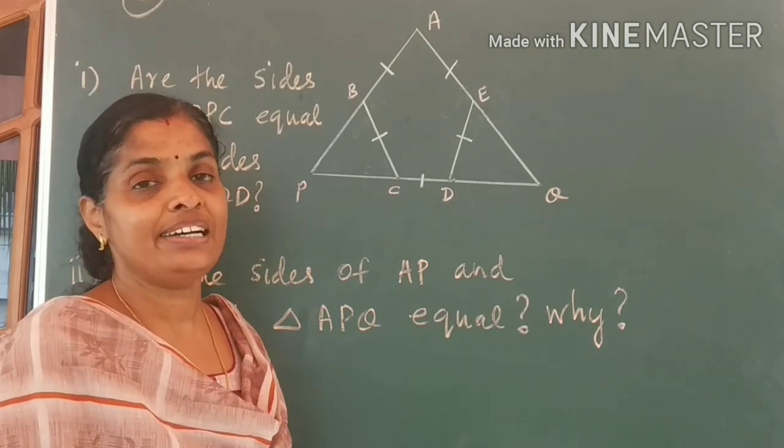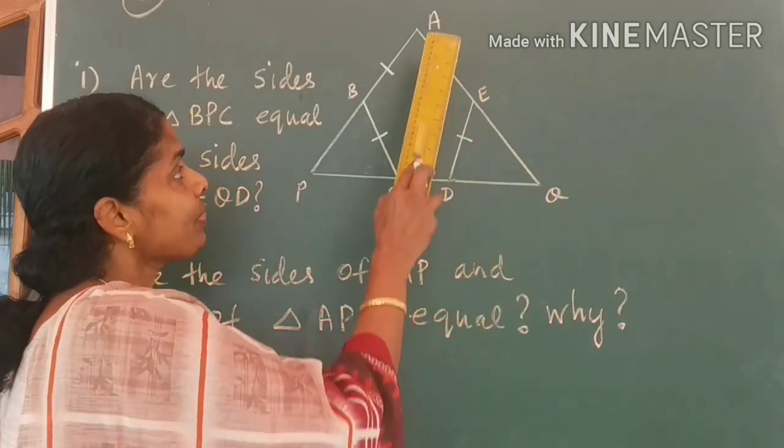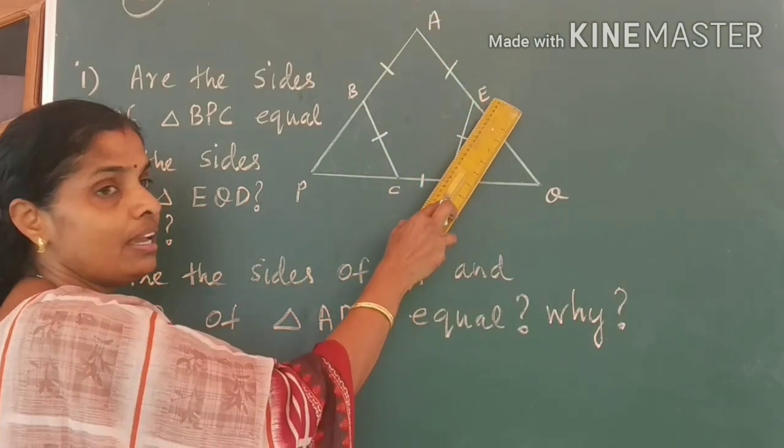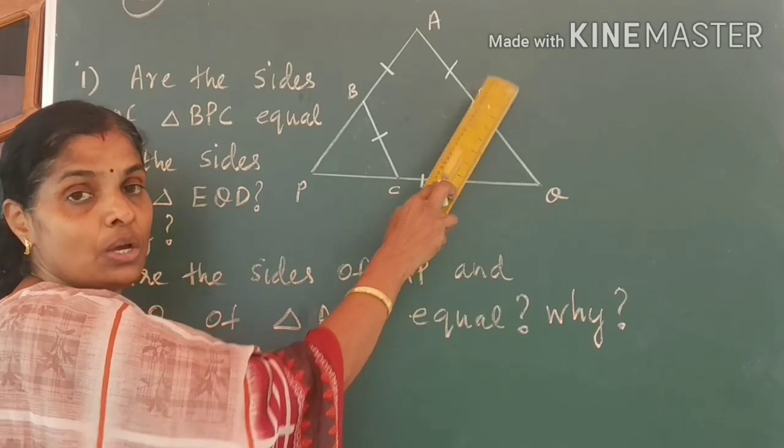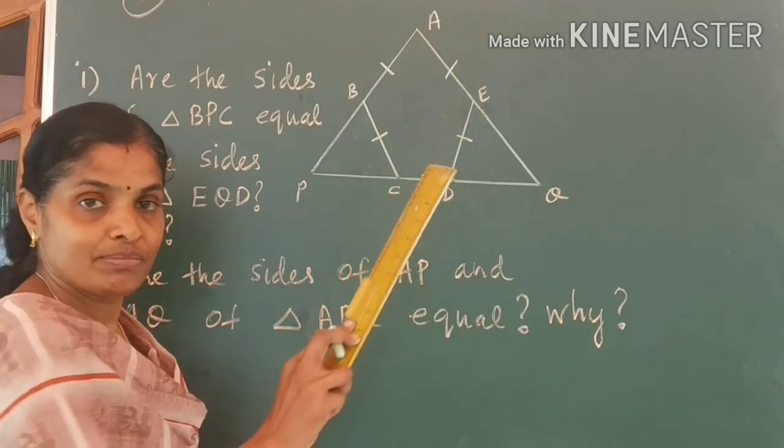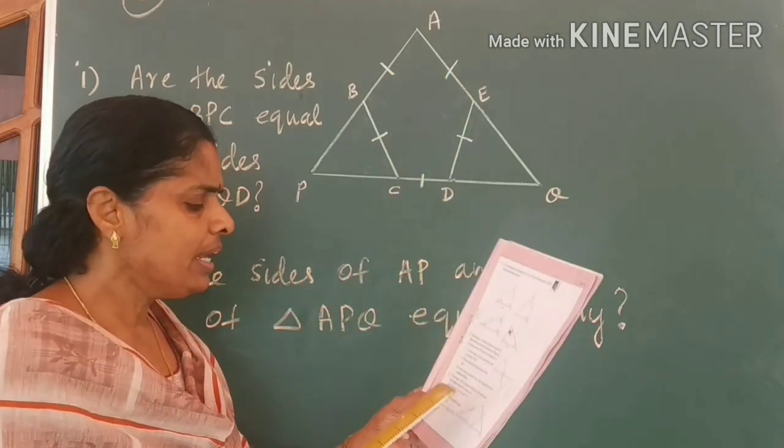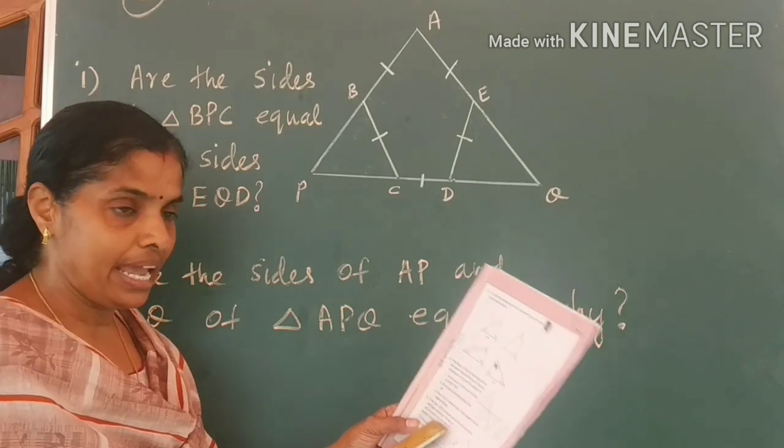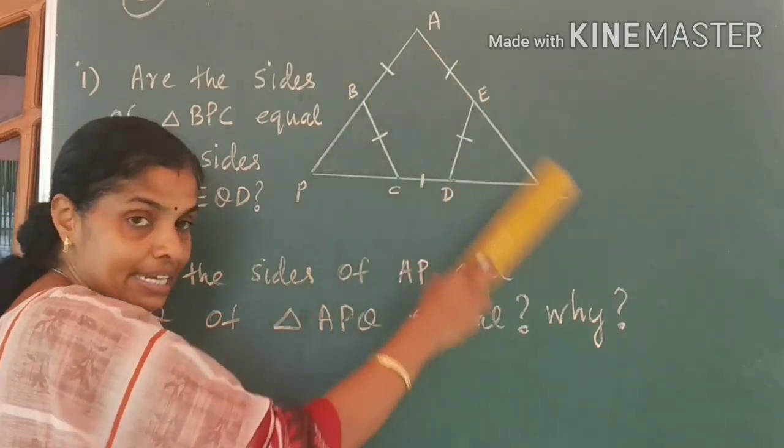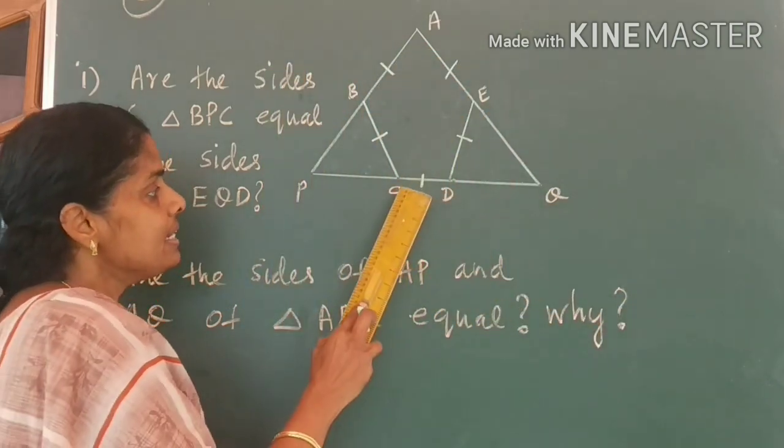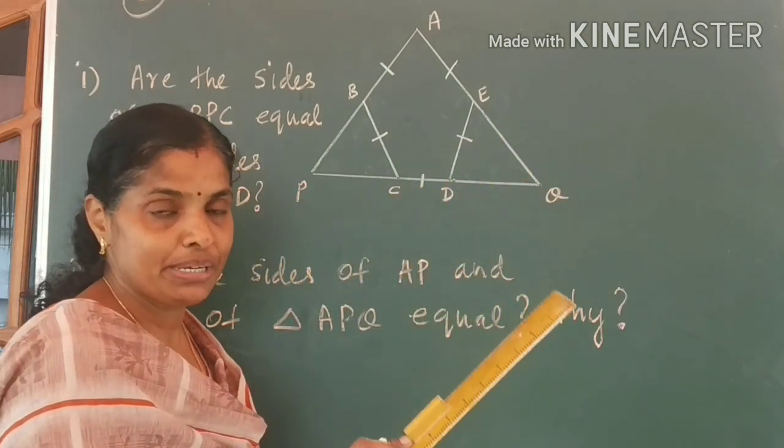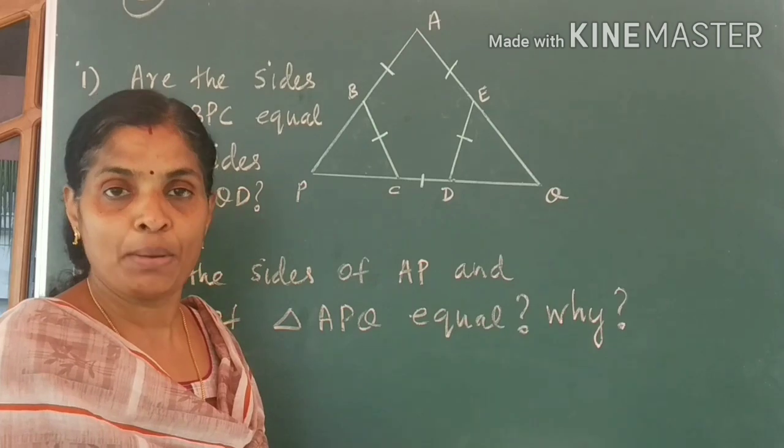Children, this is the third question in your textbook. Look at the board. A, B, C, D, E is a pentagon with all sides equal. Since sides are equal, I have drawn a small line. Now, the sides AB and AE extended. AB and AE extended meet CD extended and P and Q. Is the question clear? You read the question once again from your textbook.